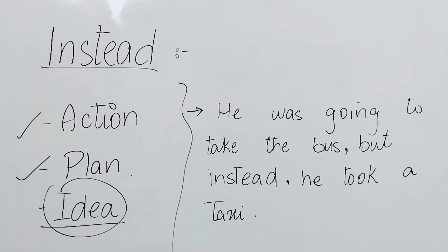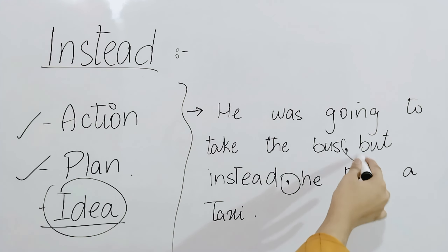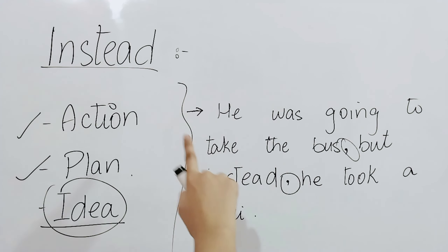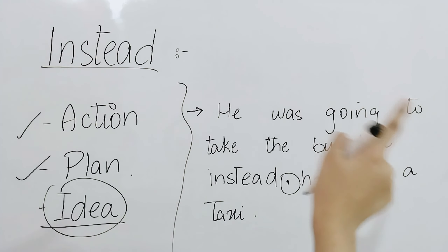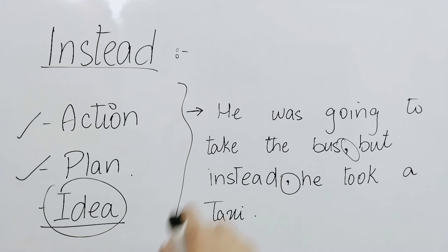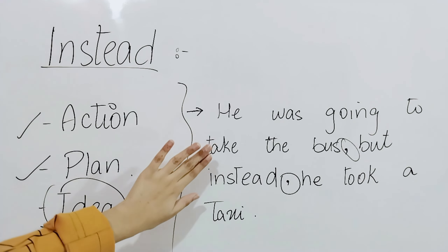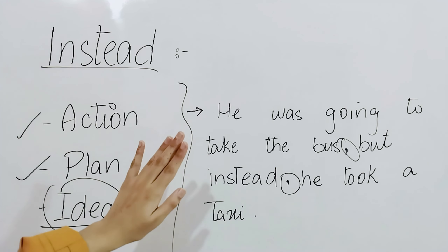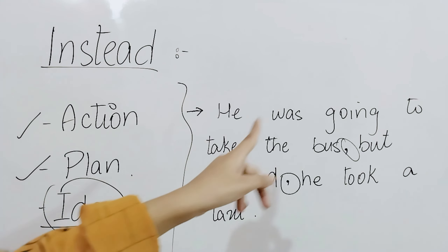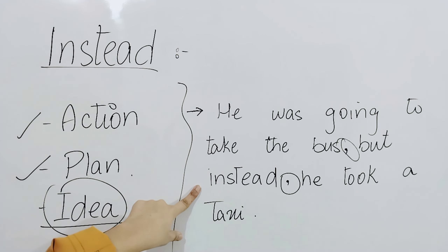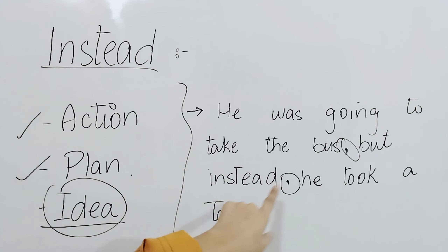Now one thing to note is the placement of commas. First comes the original idea or first action, then a comma, then 'but instead,' then another comma, and then the changed action — the new plan.